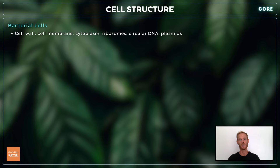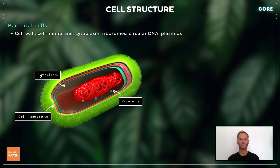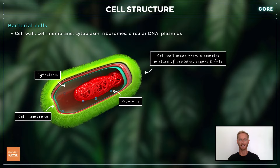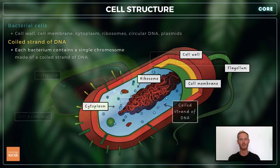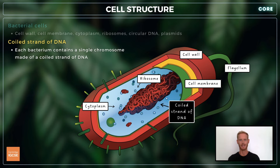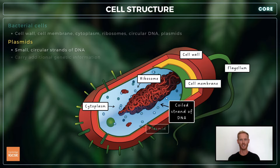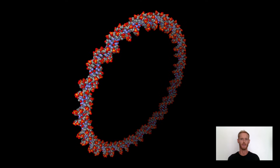In addition to plant and animal cells, you also need to know about bacterial cells. Bacteria are single-celled organisms and, like plant and animal cells, they have a cytoplasm, cell membrane and ribosomes. They're also surrounded by a cell wall, but unlike plants, this wall is not made of cellulose. Bacterial cells have no nucleus. Instead, each cell contains a single chromosome made of a coiled strand of DNA. They also contain plasmids, which are small circular structures also made of DNA, carrying additional genetic information that helps the bacterium to survive and reproduce.